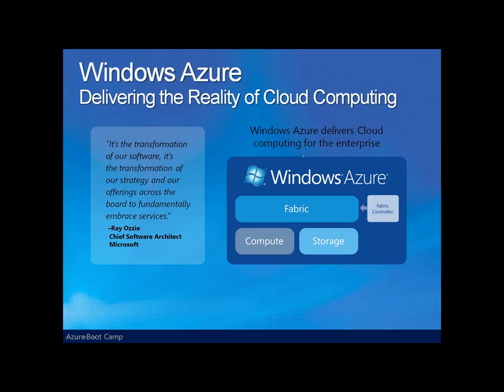So Windows Azure is the hosting environment for your cloud-based services. A large group of machines, each potentially running a number of virtual machines, with switches, load balancer, and more running in Microsoft data centers, make up what is called the Fabric. The Fabric provides your virtualized computation and storage platform.